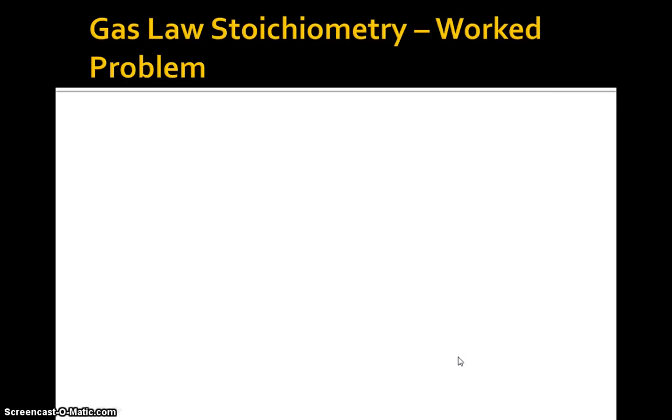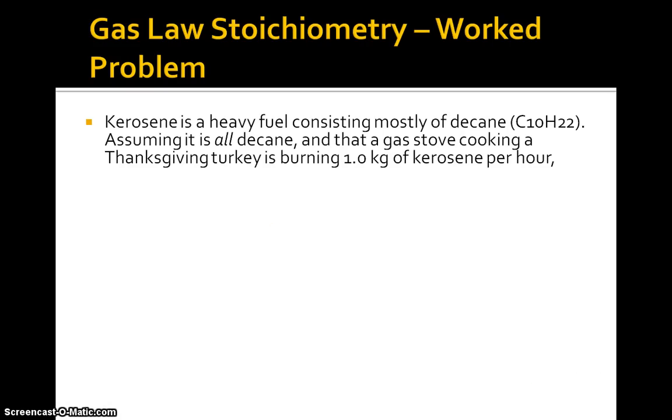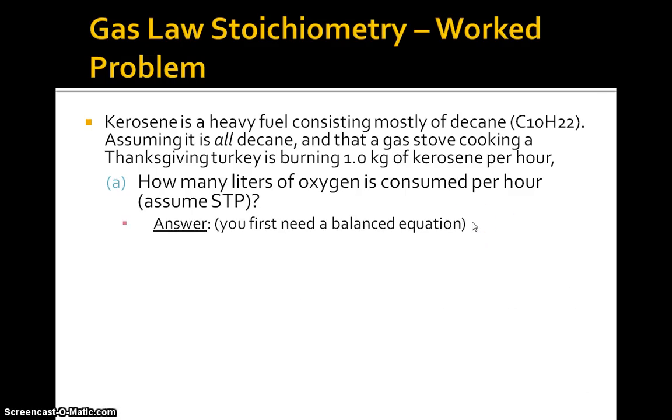So let's do a gas law stoichiometry worked problem, a problem that's been worked out for you. Kerosene is a heavy fuel consisting mostly of decane (C10H22), and here is the formula right there, in case you need it. And of course, you will. Assume it's all decane, and that a gas stove cooking a Thanksgiving turkey is burning 1.0 kg of kerosene per hour. How many liters of oxygen is consumed per hour, and assume STP? Answer? Well, first, you need a balanced equation. So we need to burn our C10H22 with an appropriate amount of oxygen to get our CO2 and H2O. And of course, this all has to be balanced. I prefer whole numbers here because we would want to work out this appropriately. And the mole ratio has also turned out to be whole numbers, which is kind of cool, too.